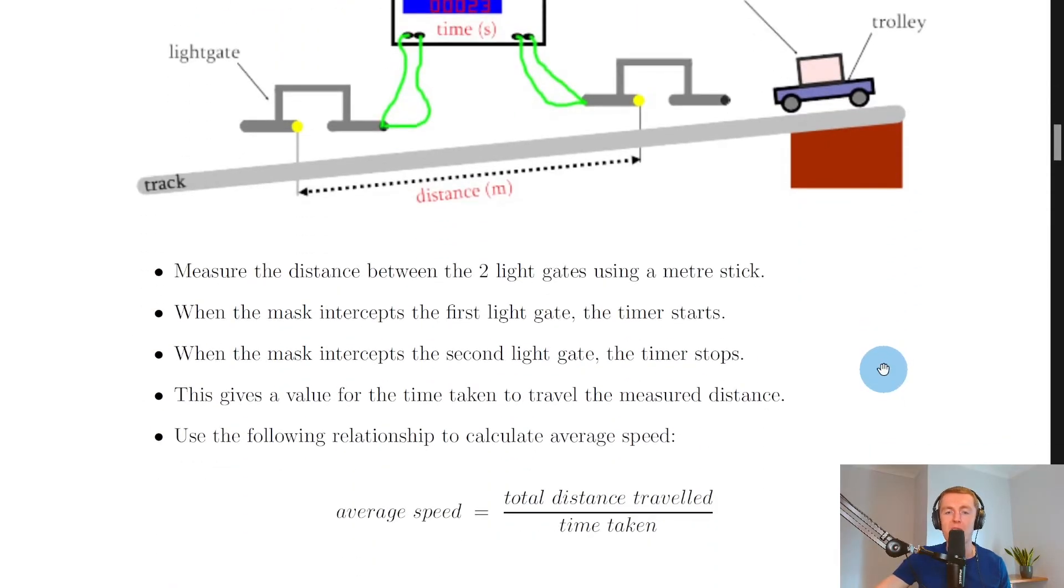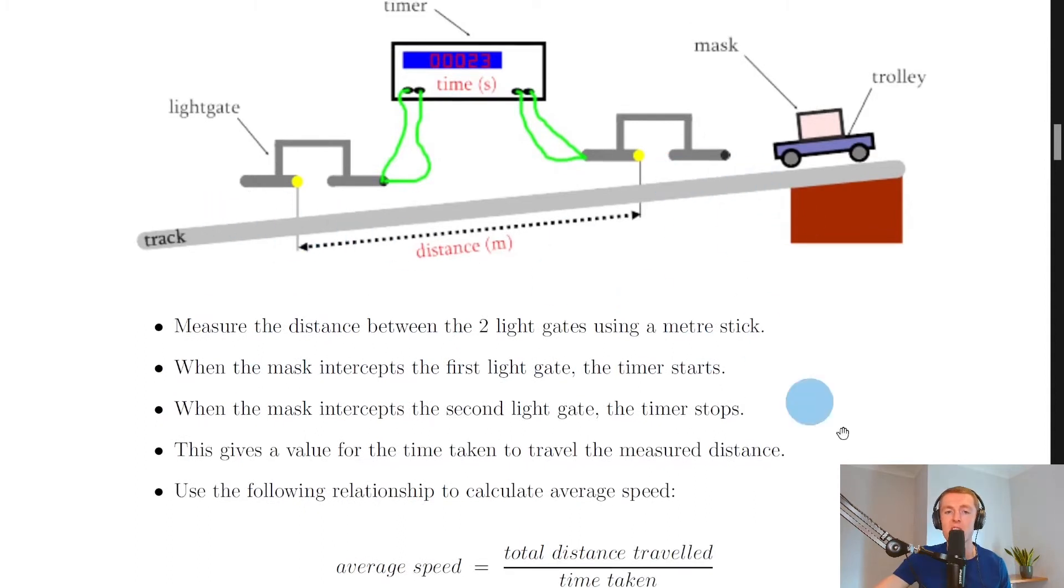The way the experiment works is quite simple. Firstly, you would measure the distance between the two light gates using a meter stick, so the distance from here to here. We then know the distance that we can sub in at the end to calculate the average speed.